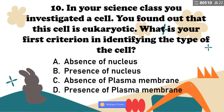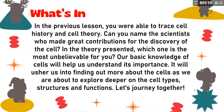Number 10, the last question: In your science class, you investigated the cell. You found out that the cell is eukaryotic. What is your first criterion in identifying the type of the cell? A, absence of nucleus; B, presence of nucleus; C, absence of plasma membrane; D, presence of plasma membrane. That is correct — there is the presence of nucleus.